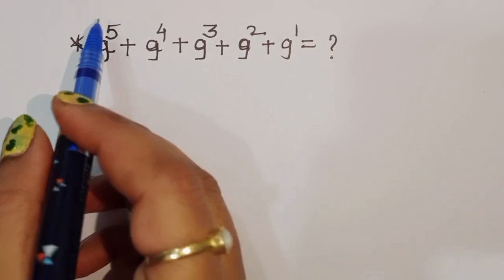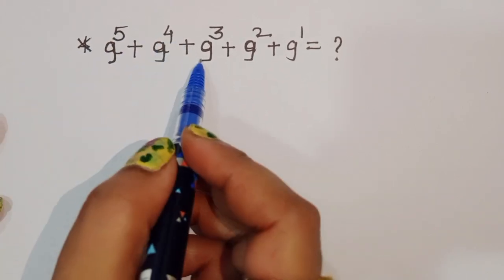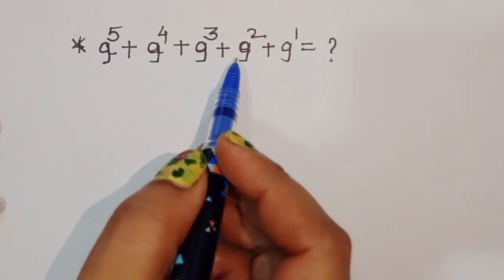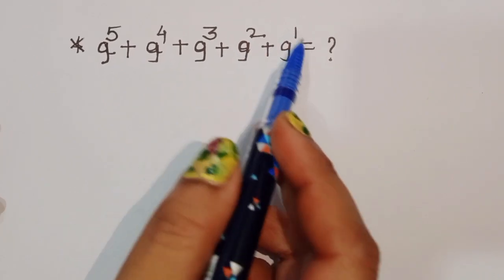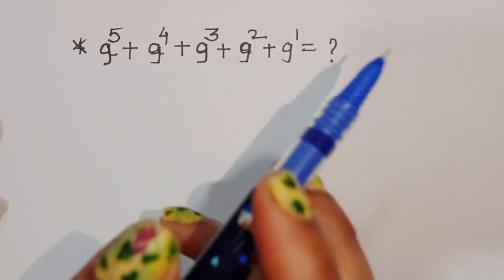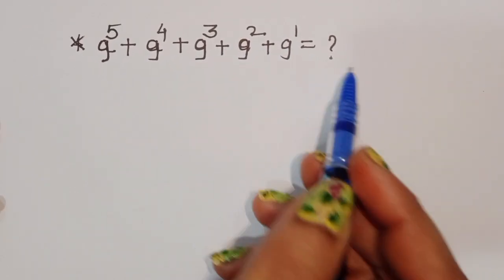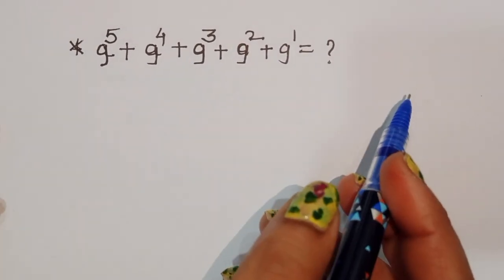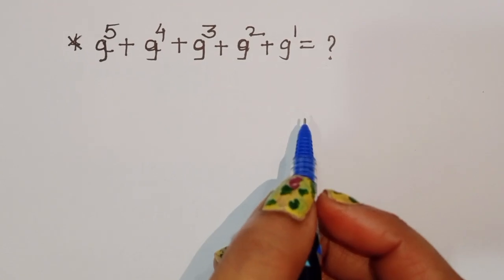The question is: 9 power 5 plus 9 power 4 plus 9 power 3 plus 9 power 2 plus 9 power 1 is equal to what? We have to find out the value of this. Let's see the solution.